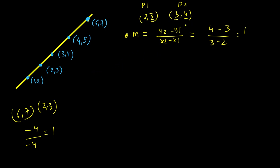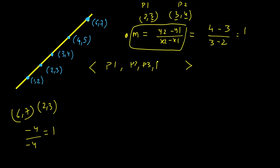The approach is straightforward: first calculate the slope of the line. We are given a vector of coordinates — say p1, p2, p3, p4, p5. LeetCode guarantees at least two points, so we don't need to worry about the base case of fewer than two points, since a single point cannot form a line. First, calculate the slope using the first two points.